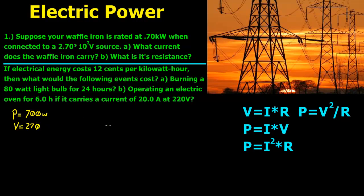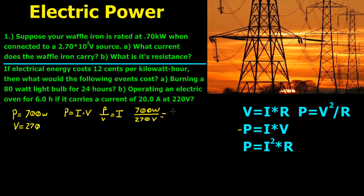When we look at the equation P equals I times V, and we're looking for the current, we just rewrite that to say power divided by voltage gives us our current. So we take 700 watts divided by 270 volts, and it gives us 2.60 amps.